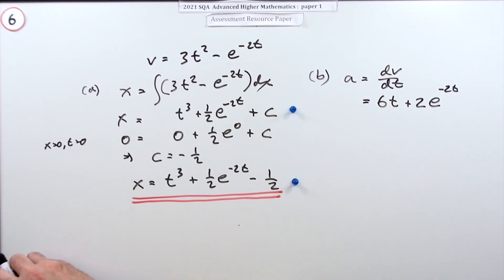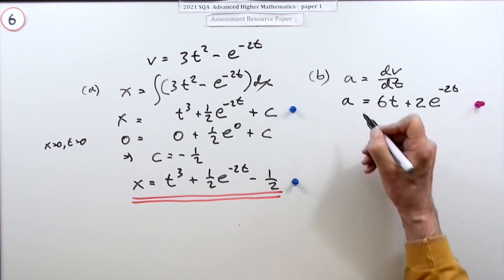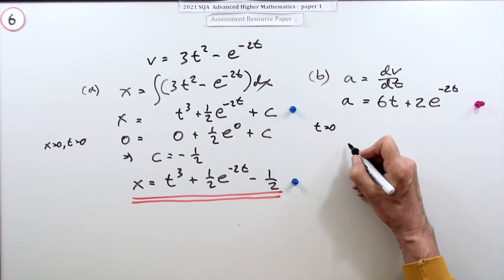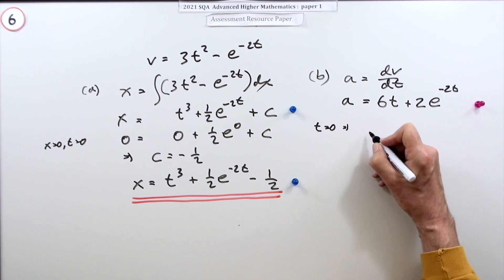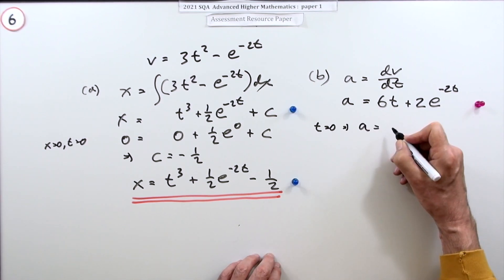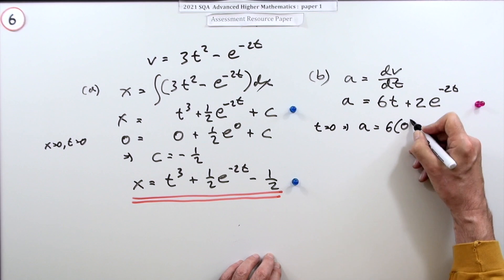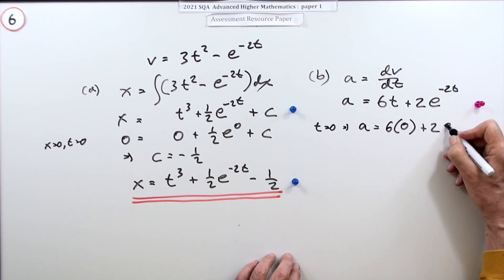So there's the acceleration. What's acceleration at t = 0? Well, t = 0 means that a would be 6 times 0 plus 2 times e^0.